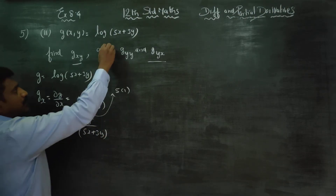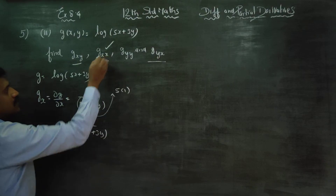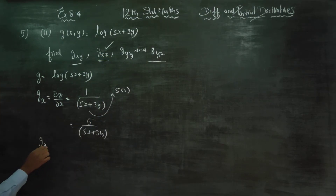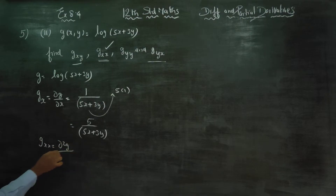Next, I will complete the double x part. What is the meaning of double x central? Gxx means ∂²g/∂x².